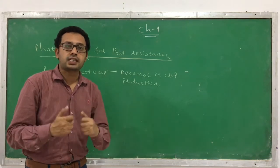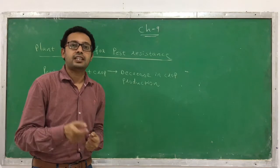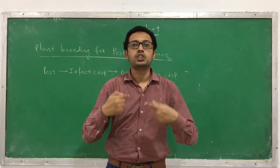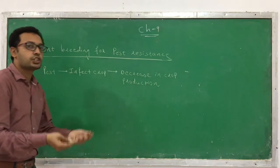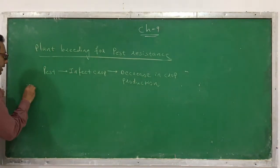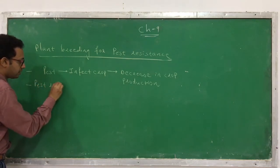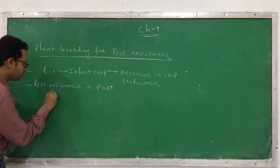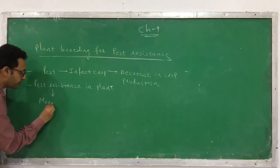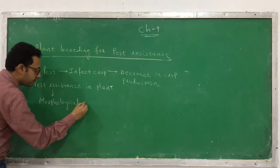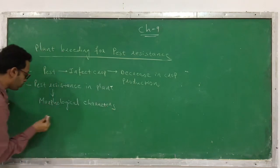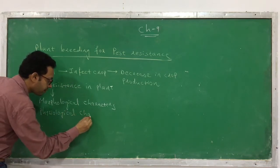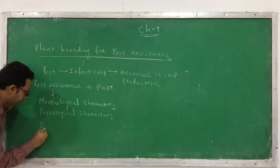Pest resistance is a characteristic of a plant in which the plant cannot be affected by insects and pests. There are a few plants which have genes or characteristics that are not affected by pests. This pest resistance in a plant is due to either morphological characters, physiological characters, or biochemical characters of a plant.